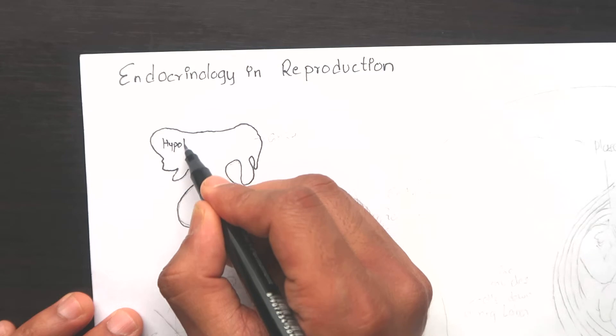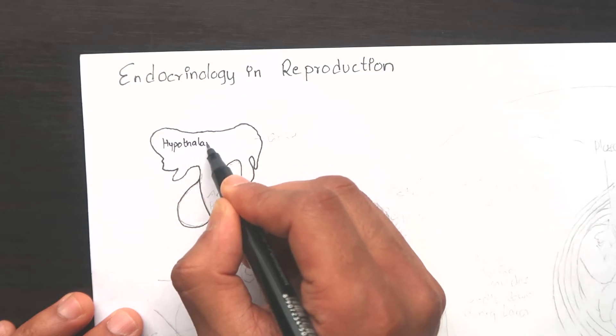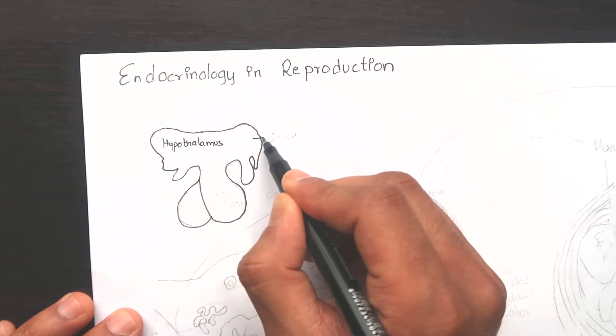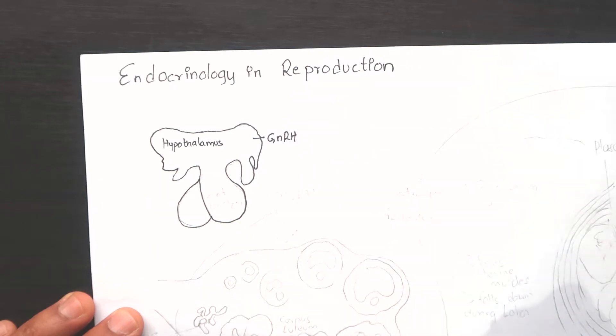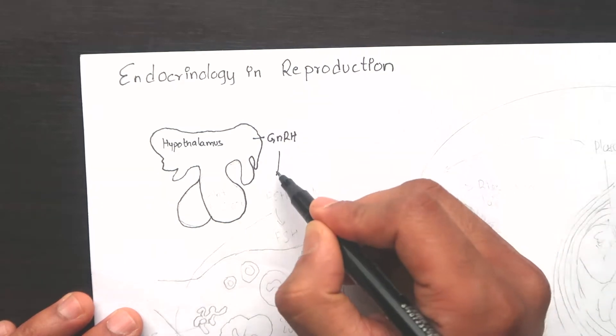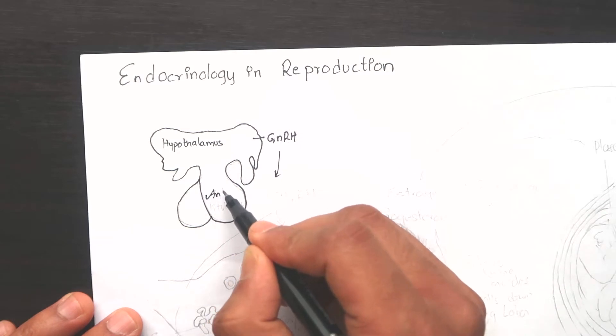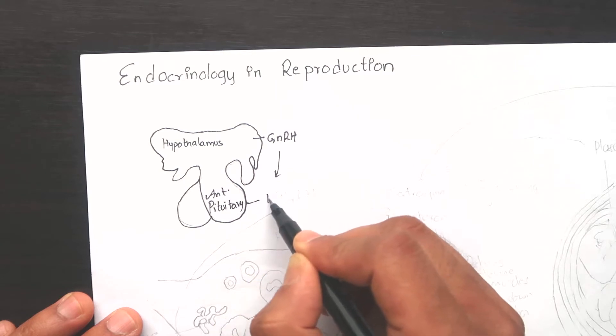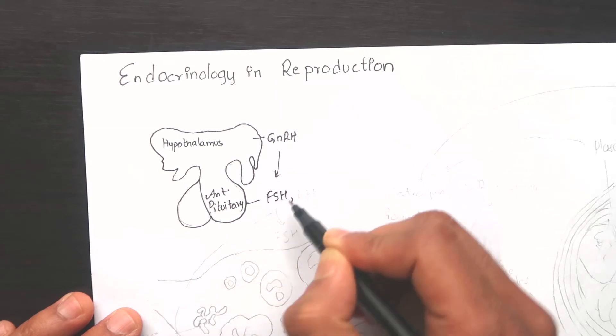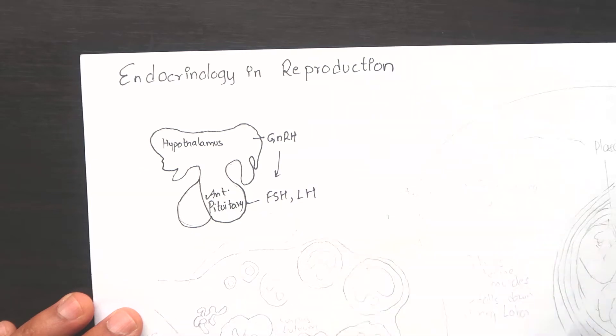Hypothalamus is also known as the master of master endocrine gland because it controls the master endocrine gland, pituitary. Hypothalamus produces gonadotropin releasing hormone from the preoptic area and this hormone moves through the blood vessels to stimulate anterior pituitary. Anterior pituitary produces gonadotropins such as follicle stimulating hormone and luteinizing hormone.